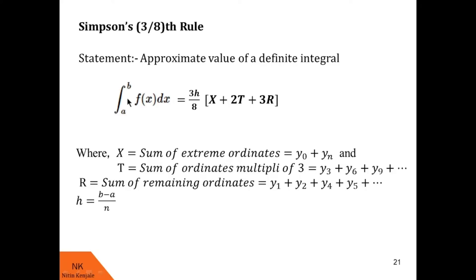It is given by b minus a upon n when interval a to b is divided into n equal sub-intervals. Note that ordinates appearing in x will not appear in t. Similarly ordinates appearing in t will not appear in r. Now let us see examples on Simpson's three-eighth rule.